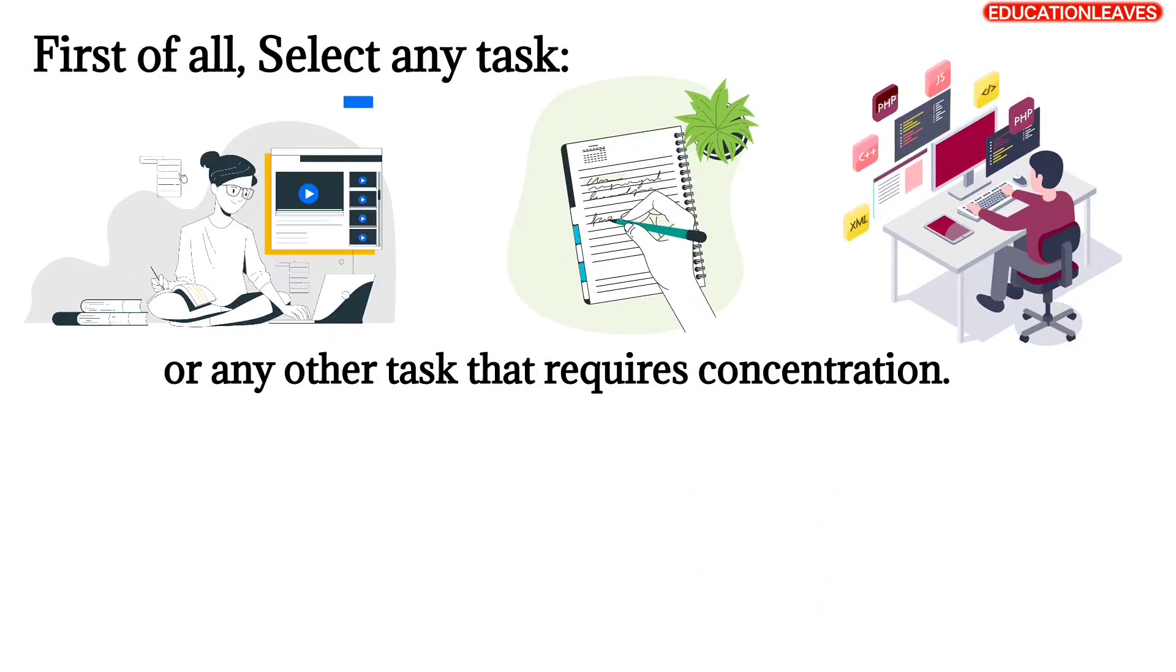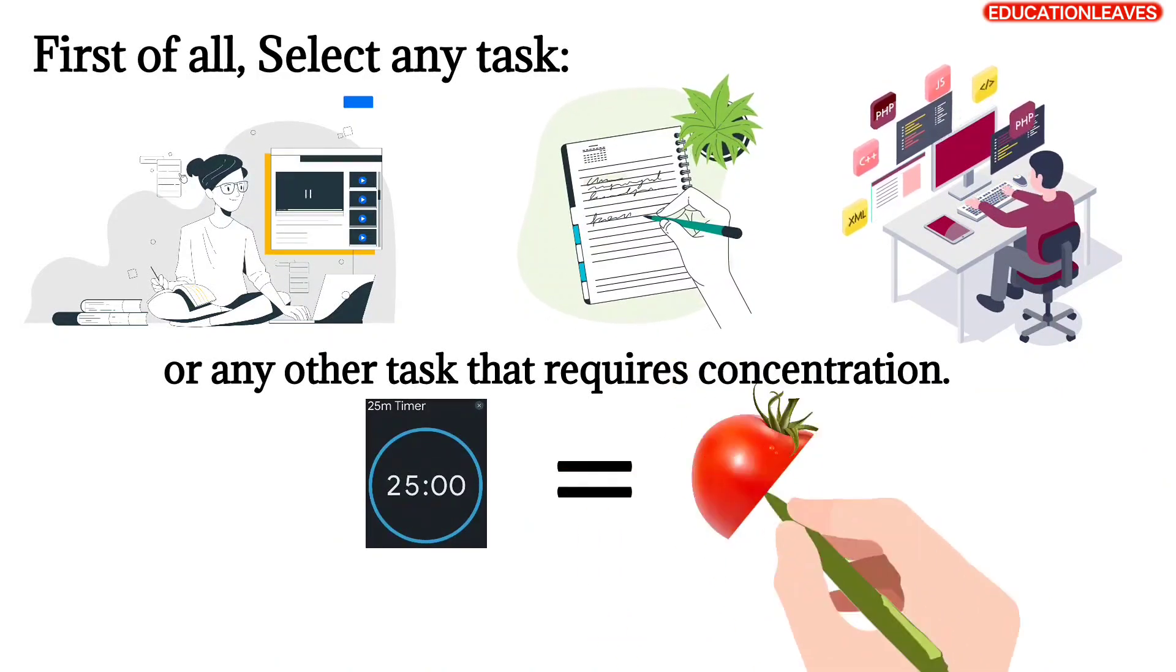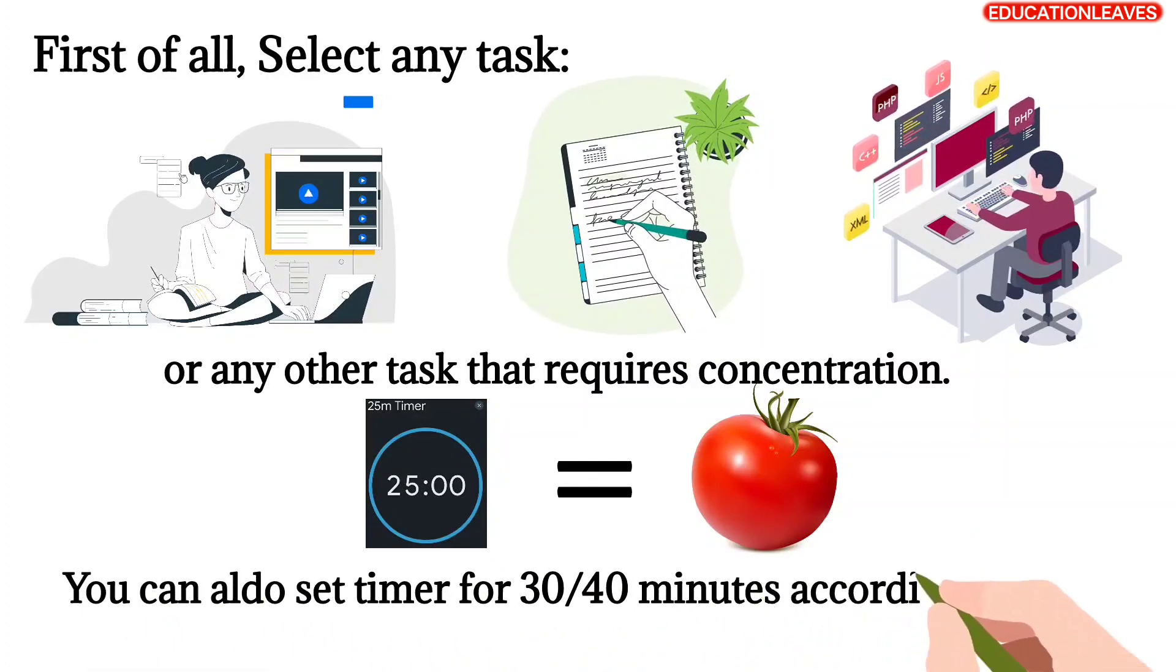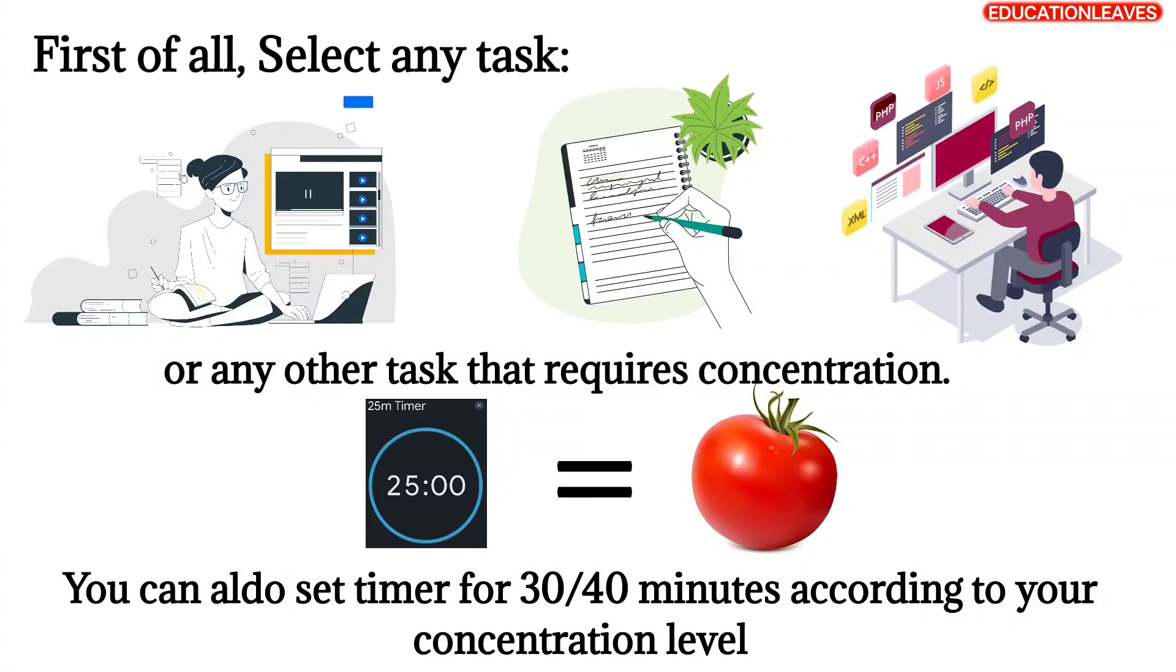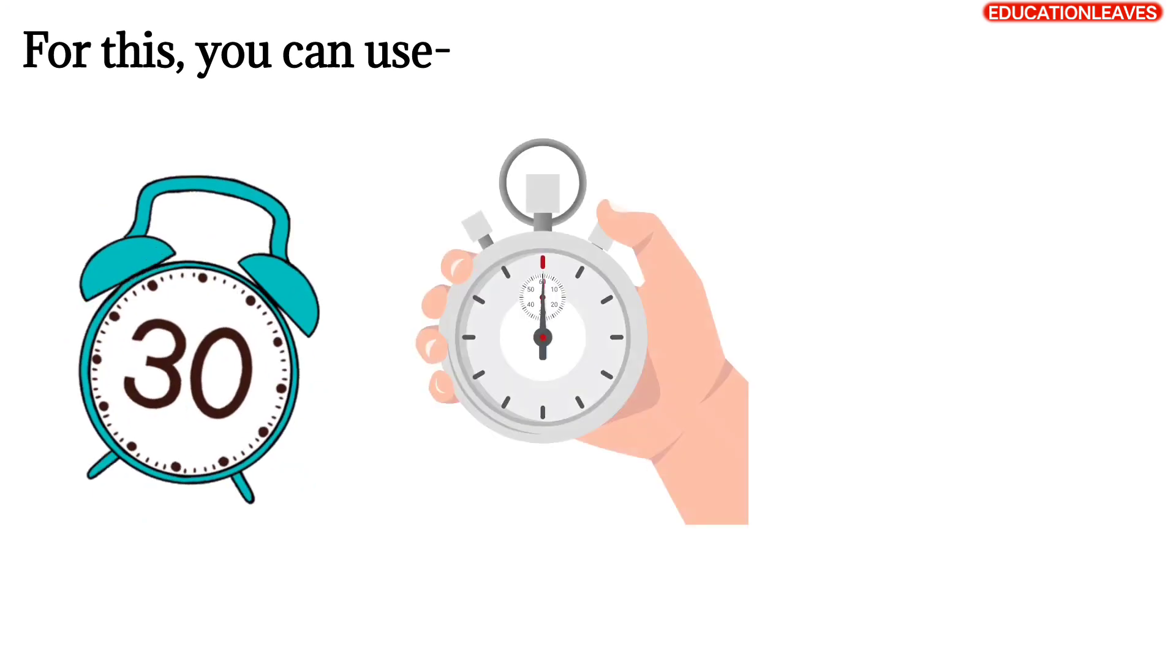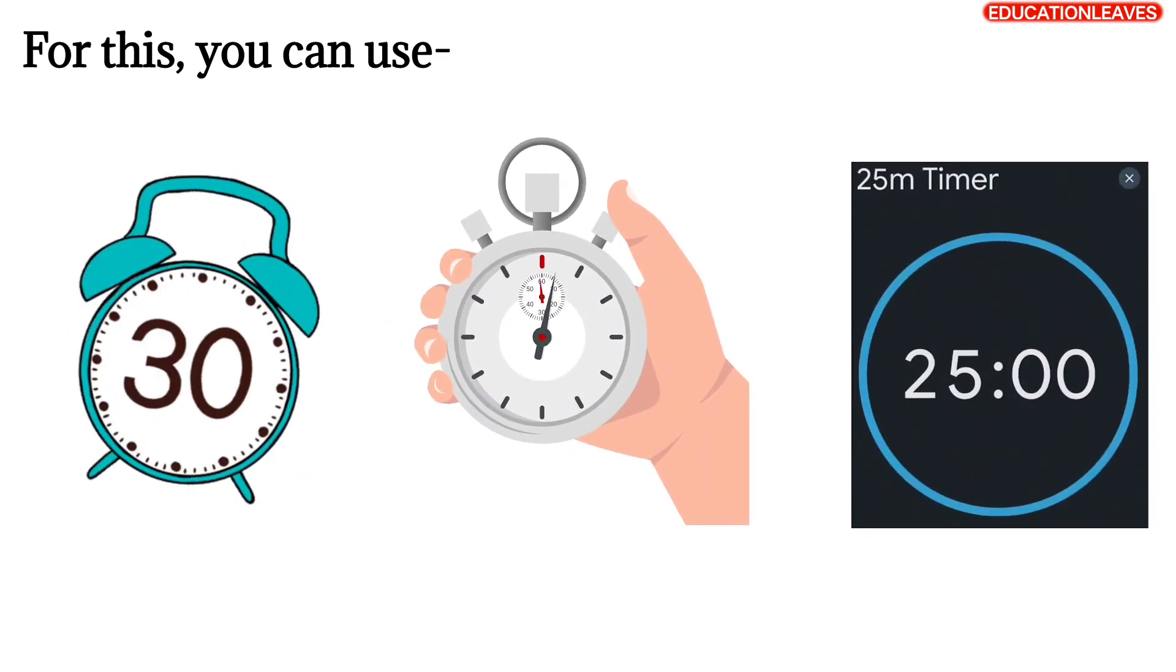Then set a timer for 25 minutes, which represents one Pomodoro. You can also set a timer for 30 or 40 minutes according to your concentration level. For this, you can use a timer clock, stopwatch, or any smartphone timer app.